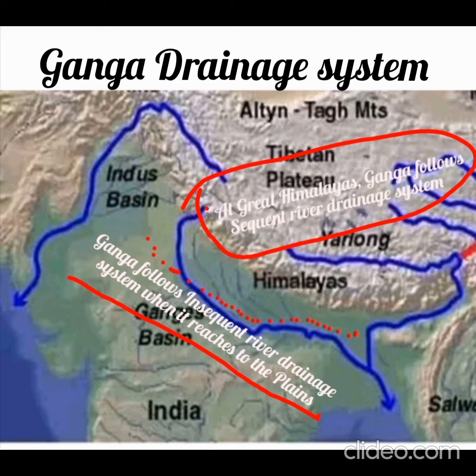When Ganga originates from the Great Himalayas, it follows the slope and is adjusted as per the geological structure. At that time, in the Great Himalayas, it was a sequent river — or more precisely, a consequent river. But when it reaches the plains crossing the Middle Himalayas, it becomes an antecedent river, or insequent river.